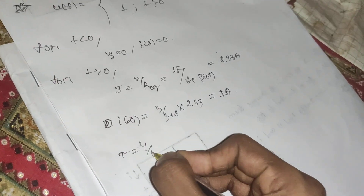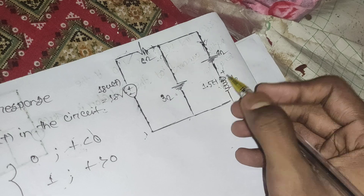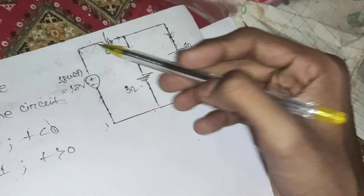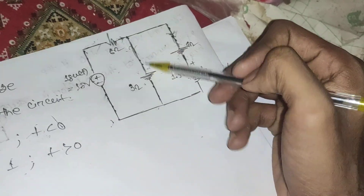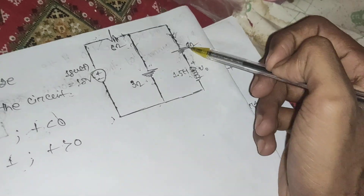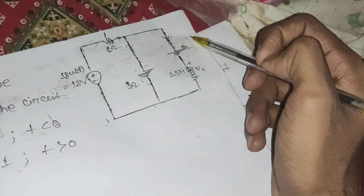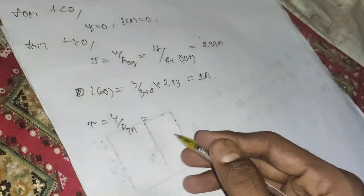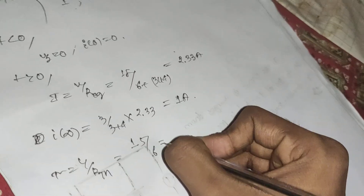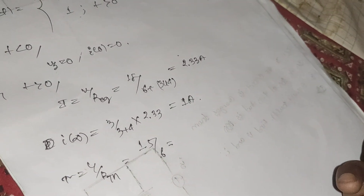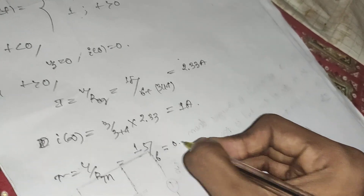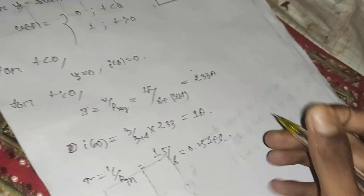Now we calculate tau = L/R_th. For R_th at those terminals, 6 and 3 are in parallel: (6×3)/(6+3) = 2. Then 2 and 4 are in series, giving R_th = 6. With L = 1.5 H, tau = 1.5/6 = 0.25 seconds.